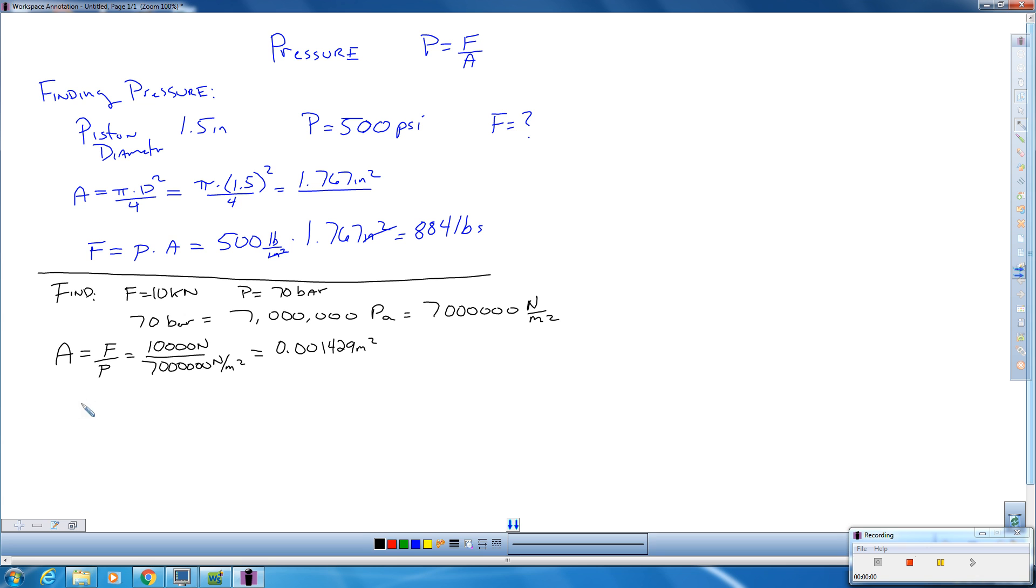All right, so we have to solve that equation for a. And what equation are we talking about? The area equation. Area equals pi times d squared over 4. We have to solve this equation over here for d.